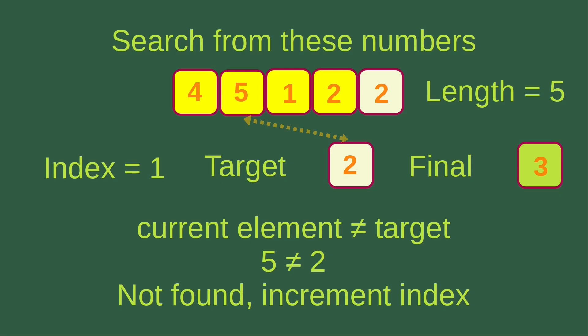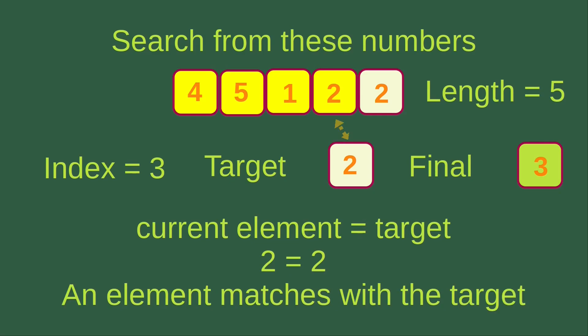We increment the index to 2. The element at index 2 is not equal to the target. Then the index is incremented to 3, and we check whether the element at index 3 equals the target. We find that 2 equals 2, so the current element matches the target.